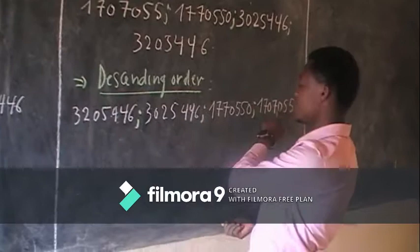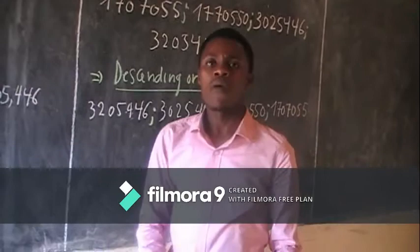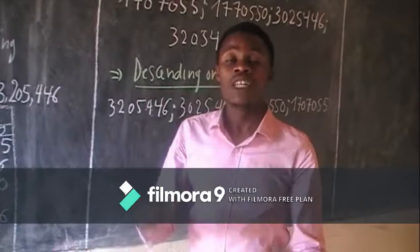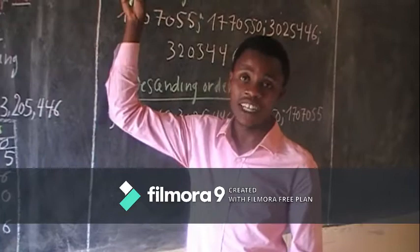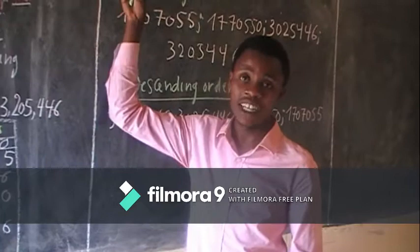This is the greatest, this is the smallest. Learners, today you have seen how to arrange numbers from the highest to the lowest, which is called descending order, and how to arrange numbers from the smallest to the greatest, which is called ascending order. The topic of today ends here. See you next time.